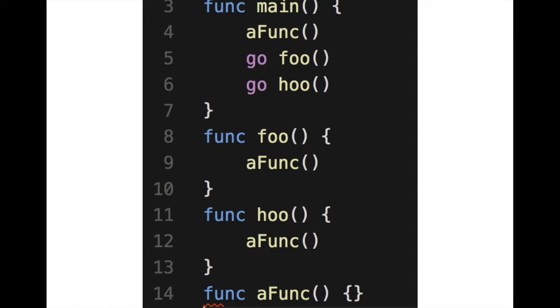We know that to launch a goroutine, it's going to be to run a function, right? So imagine now that we had this function main, and it calls some function aFunc, and then it launches two goroutines. So now we know in our program, we currently have three goroutines.